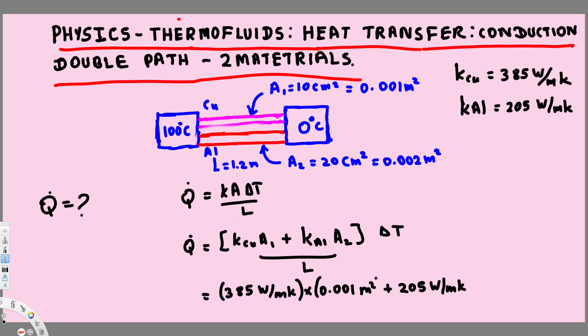Times the area of the aluminum, that is 0.002 meter square. And in the bottom, we have the length of this bar, that is 1.2 meters. If you calculate this value, you should get 66 watts.